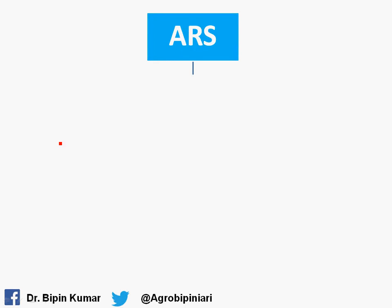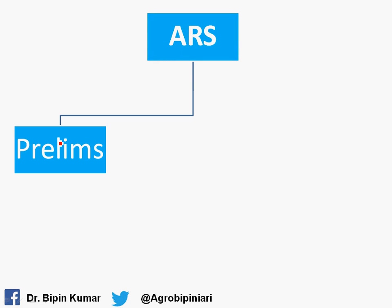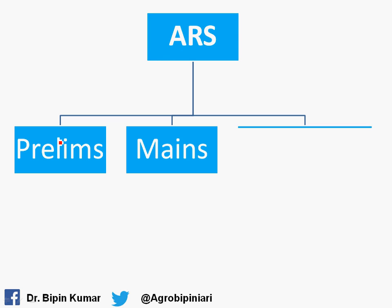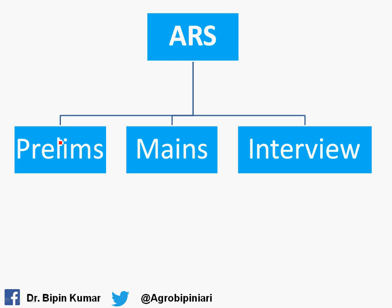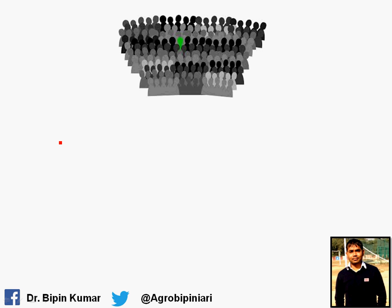The ARS exam is composed of three exams: the prelims exam, the mains exam, and the interview exam. After clearing all three, you will get the selection. Looking at the pictorial form of how the ARS exam works — there will be a very large crowd, more than a hundred or sometimes one to two thousand people sitting for ARS in major disciplines like plant breeding, agronomy, and horticulture. In some disciplines the number is less, but the competition is still neck to neck.